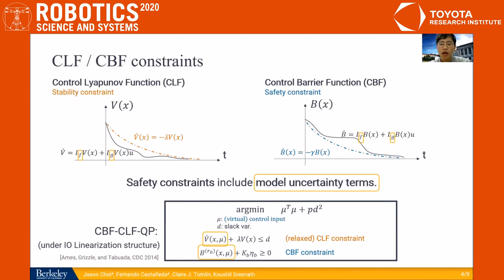But as we have said before, these constraints depend on the system dynamics F and G. So if our model is wrong, these constraints will not manage to stabilize and keep the system safe. And now I'd like to hand over to Fernando. Thanks, Jason.